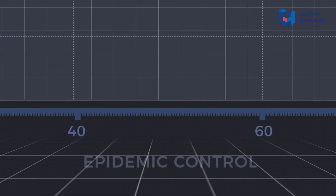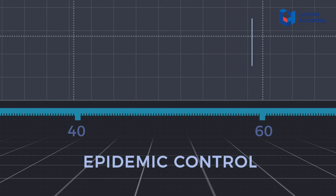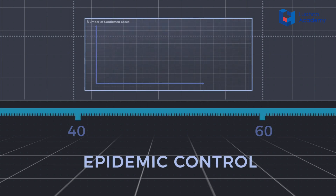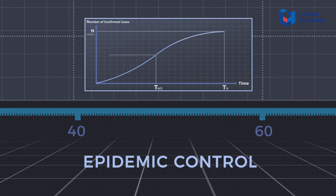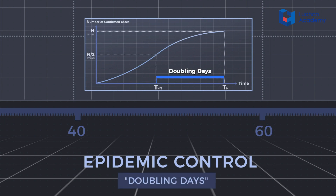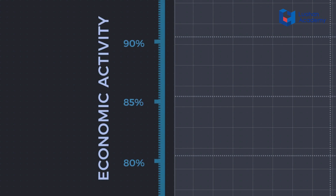The PET tracks two indicators. The x-axis is the pandemic indicator — i.e., the number of days it takes for the number of confirmed cases to double, which is a proxy for how fast the virus is spreading. The y-axis is the economic indicator — i.e., how active the economy is when measured with mobility.